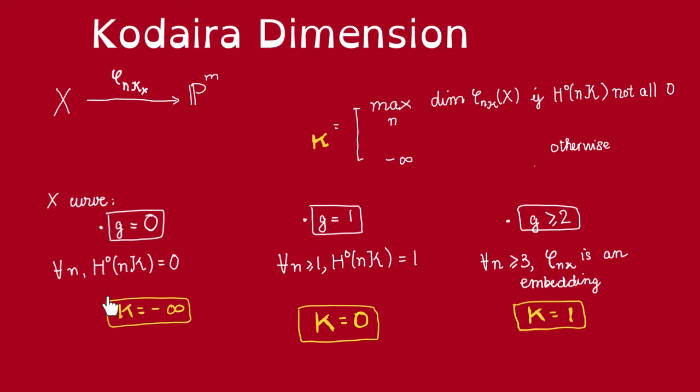On the other hand, if the genus of X is 1, then all of these space of global sections have dimension 1. So, that means that these corresponding maps must map X to a point. So, all of these images are points, so they all have the same dimension, which is just 0. So, the Kodaira dimension being the maximum of this must be 0.